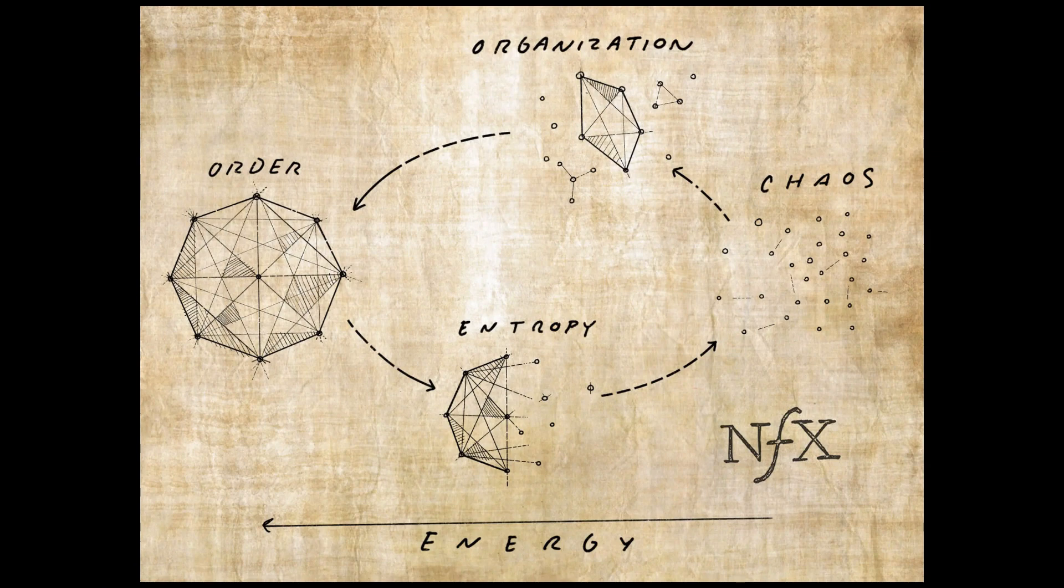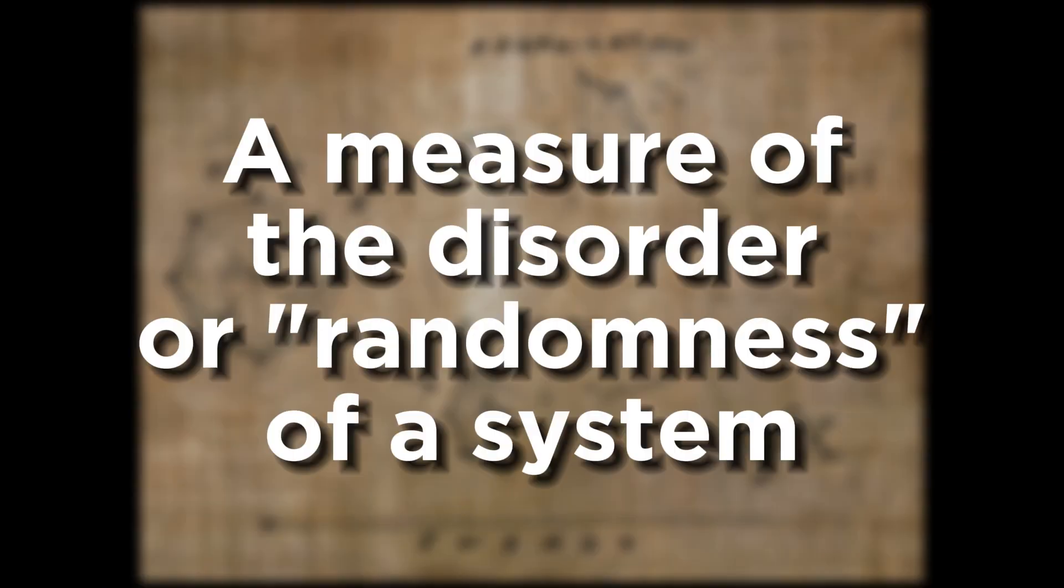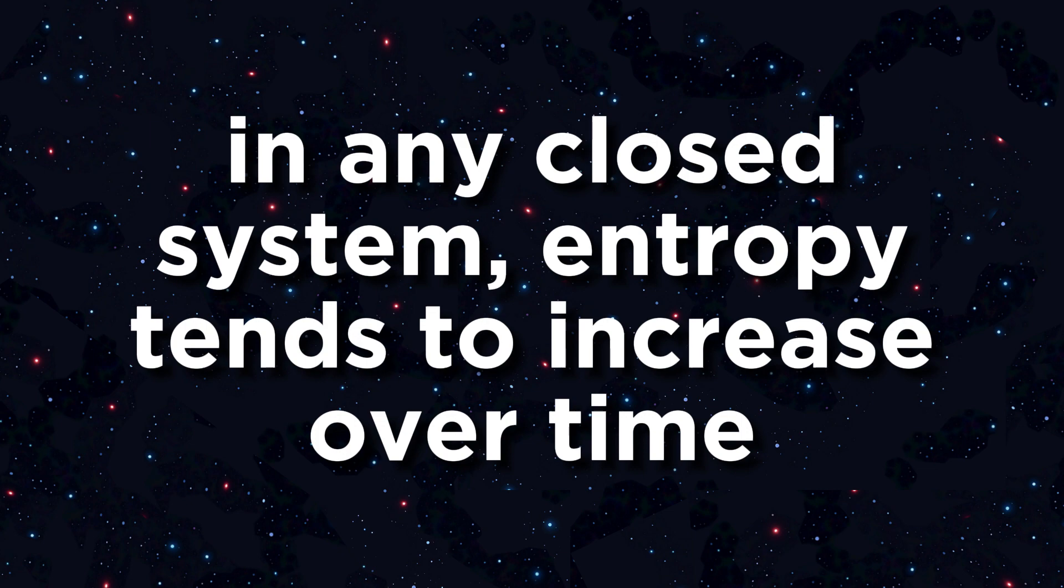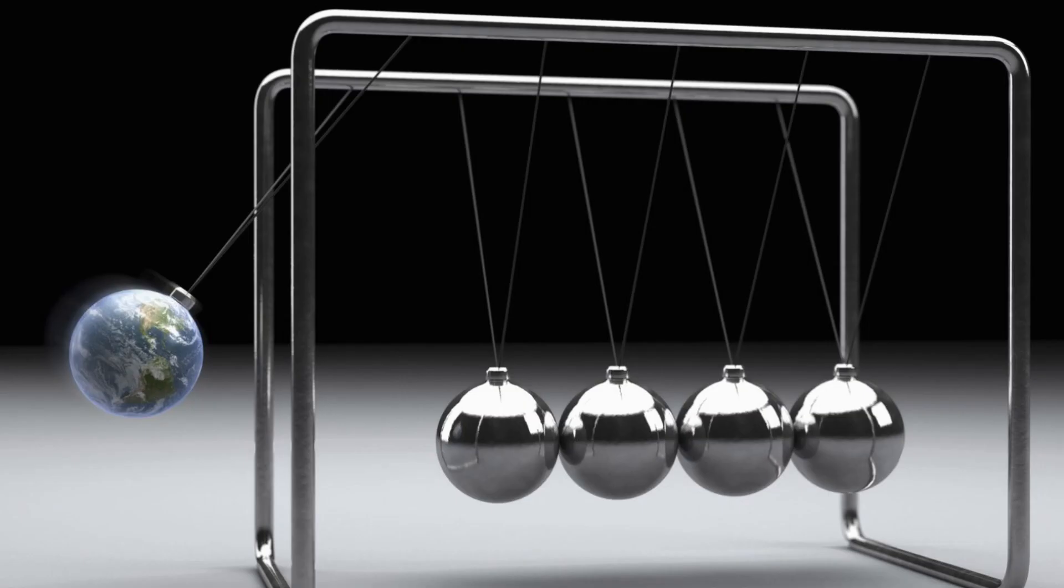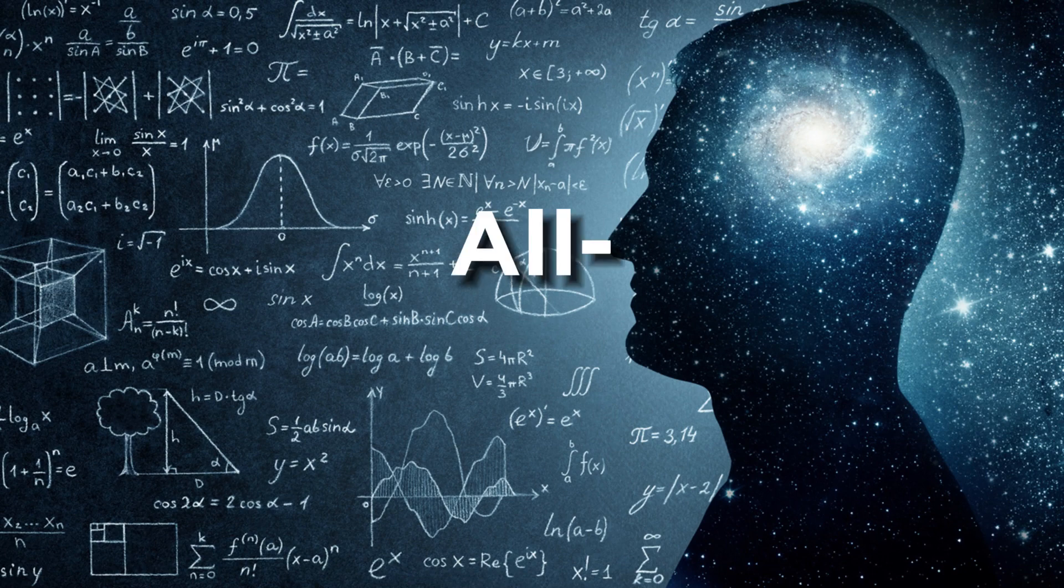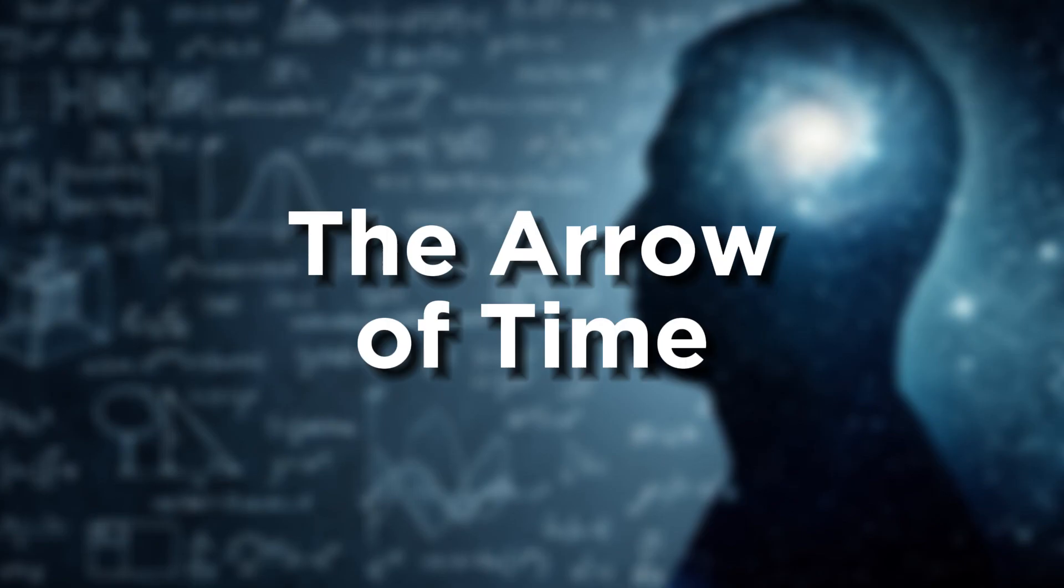His work in this field laid the foundation for our current understanding of the physical world. Boltzmann introduced the concept of entropy as a measure of the disorder or randomness in a system, and he formulated the famous second law of thermodynamics. With the introduction of this new law, the realm of physics was given the all-encompassing concept known as the Arrow of Time.